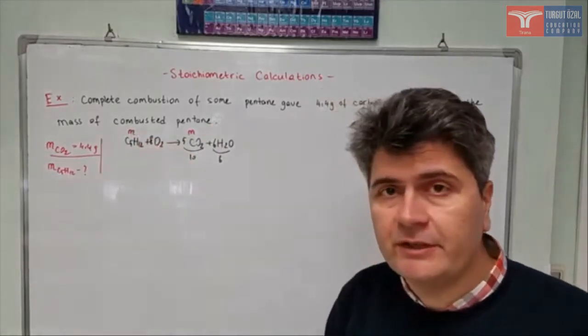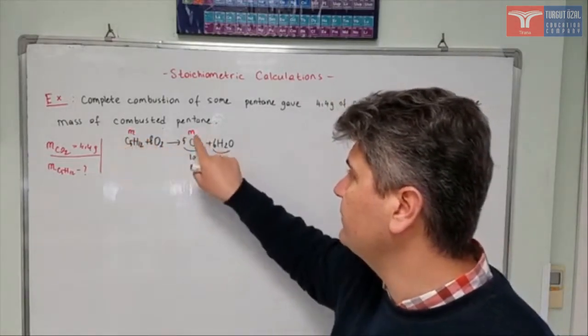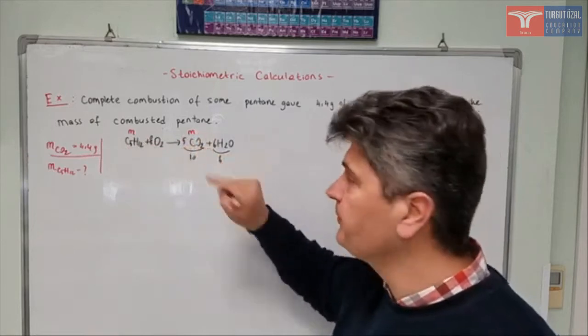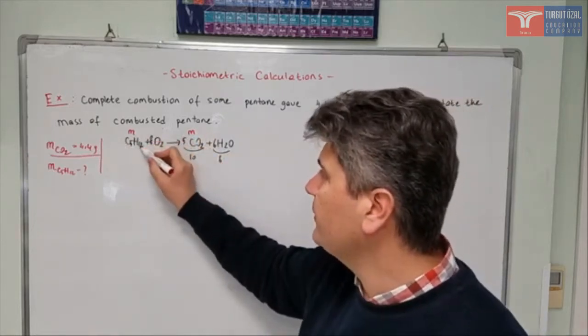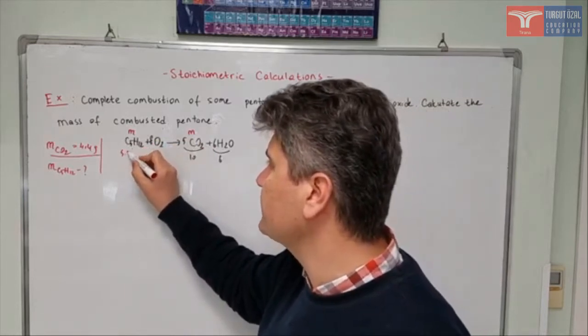So in the first method, I'll try to set a proportion between the mass of 1 mole of pentane and the mass of 5 moles of carbon dioxide. Now, mass of 1 mole of pentane is easy to find. Carbon is 12, so it's going to be 5 times 12,